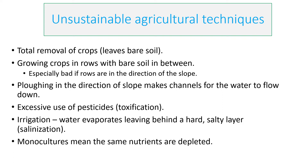Unsustainable methods of agriculture include the total removal of crops which leaves bare soil that then becomes eroded by wind or rain erosion, and can also lead to increased evaporation of water which leads to salinization. Growing crops in rows with bare soil in between is also bad because you get erosion, exposure of roots, and when you dig up the crops the soil will be more damaged.